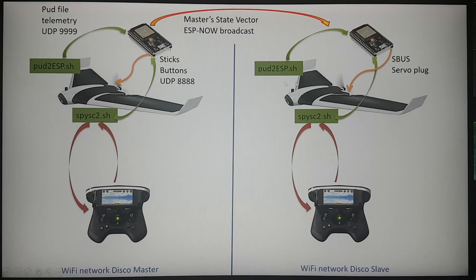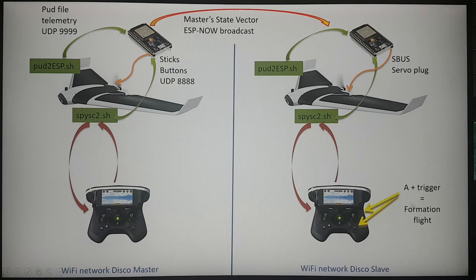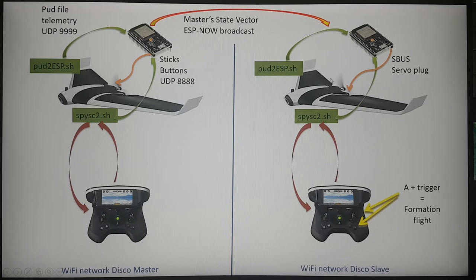The same thing could be done on the master, but it will be useless as the master will be controlled only by the Sky Controller. You also need a way to trigger the formation flying mode or the nominal mode of control via the Sky Controller on the slave Disco, so that there is a way to escape from the formation flying or to modify the formation to get closer to the master.